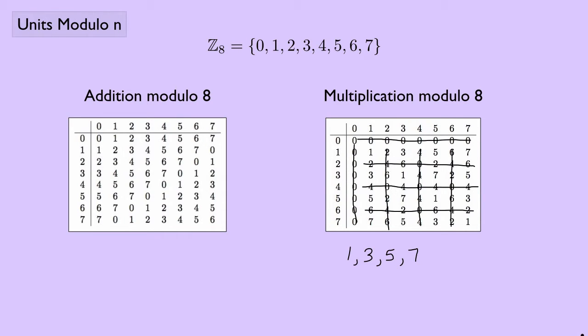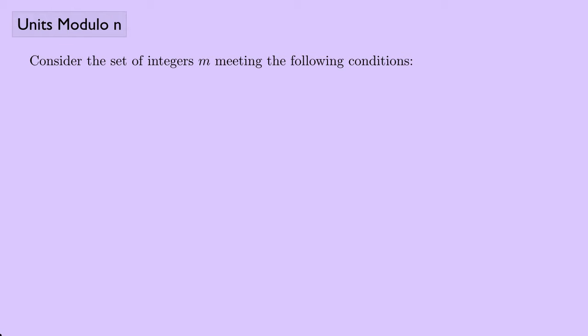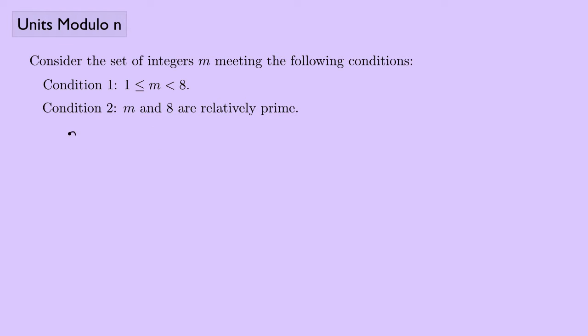Let's consider the set of integers m that meet two conditions: first, 1 ≤ m < 8, and second, m and 8 are relatively prime — meaning the greatest common divisor of m and 8 equals 1.